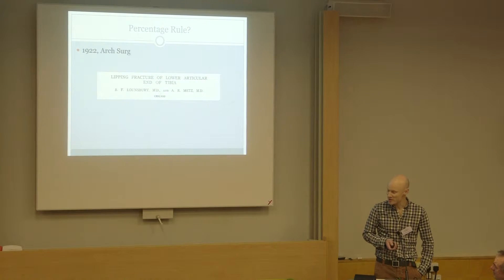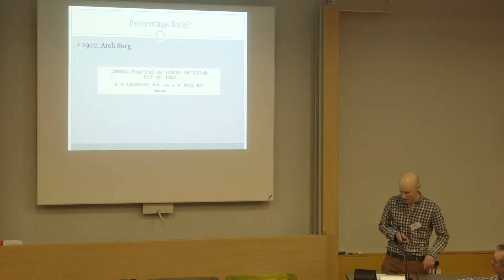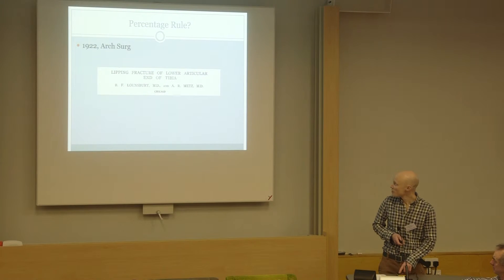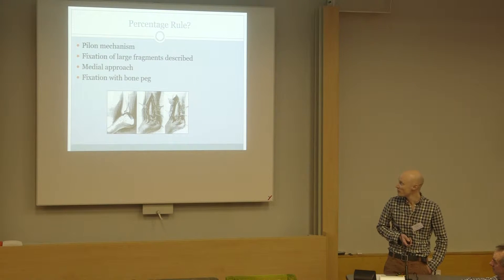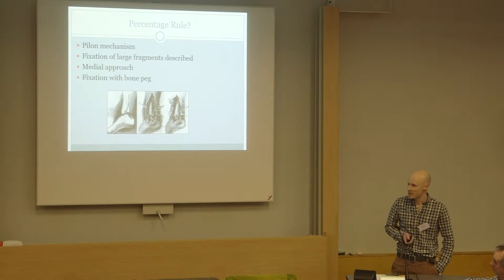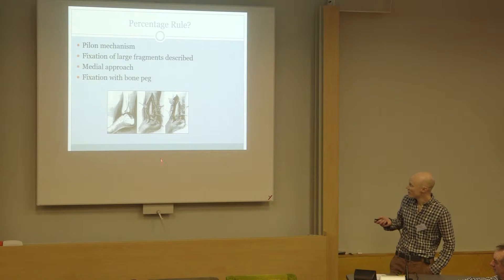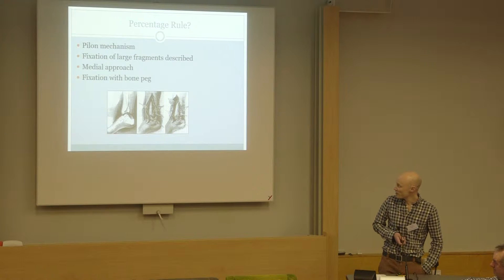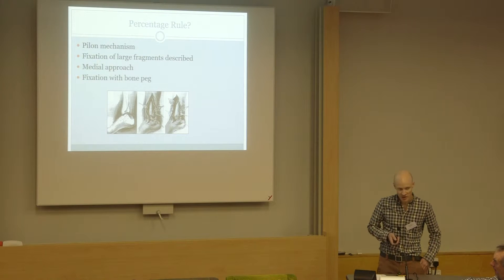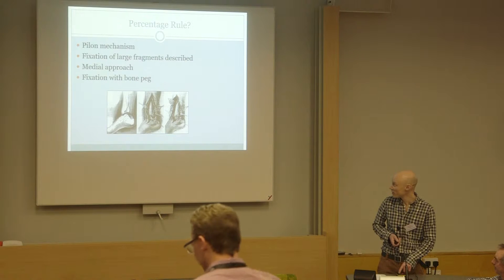The first description of fixation was in a paper in 1922. The authors describe a pilon injury mechanism — axial load to a plantar-flexed foot. They advocated fixation of large fragments, although they didn't define what 'large' was, and they used a rather extensile medial approach to fix either anterior or posterior tibial fractures. After reducing it, they drilled from the small fragment into the big fragment and then made a bone peg from the patient's iliac crest to fix the fracture.